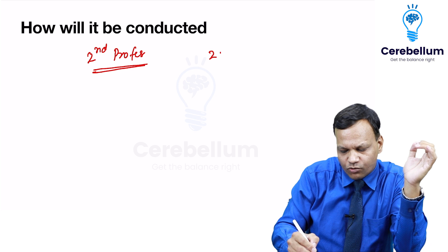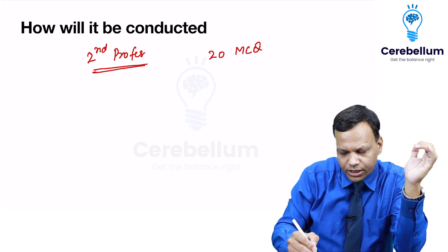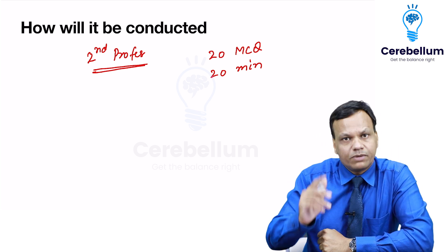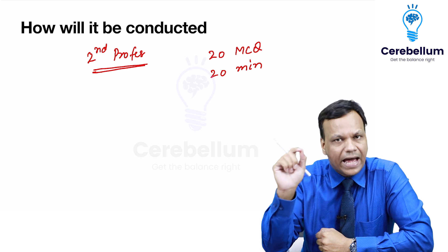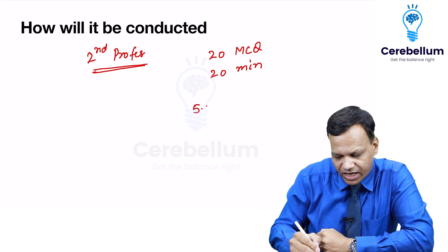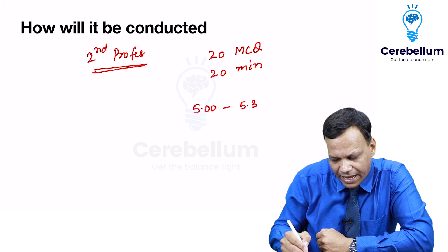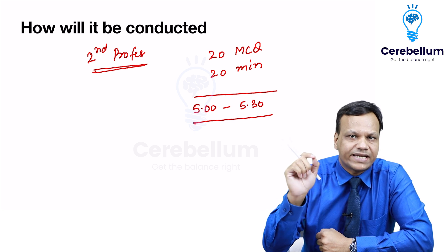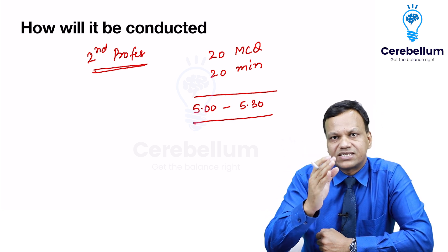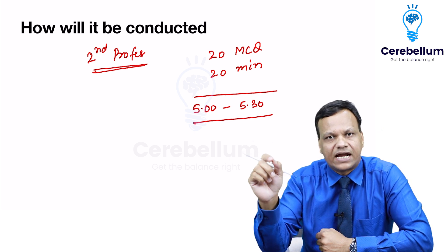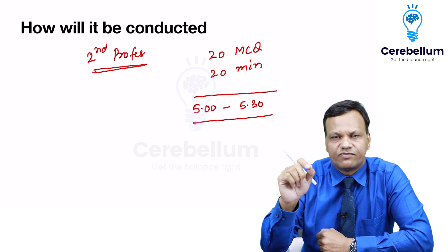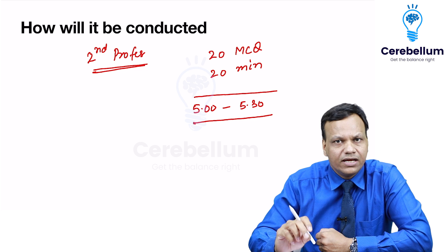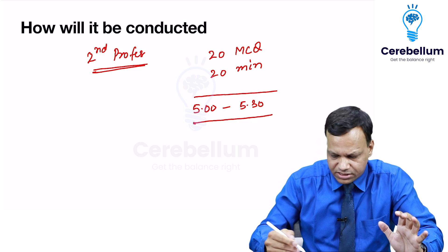What does 2020 mean? There will be 20 MCQs and you need to answer in 20 minutes. The test will be conducted on the Cerebellum app. The test will start at 5 o'clock and till 5:30 anyone can give the test. Whenever you start — for example, if you start at 5:10, the timer starts then and finishes at 5:30. If you start at 5:20, it will finish at 5:40. So you get 20 minutes to answer the questions.